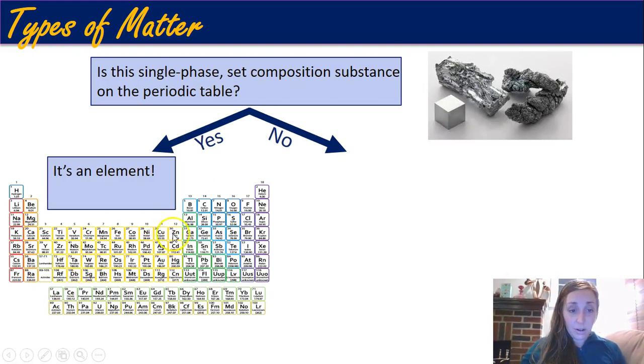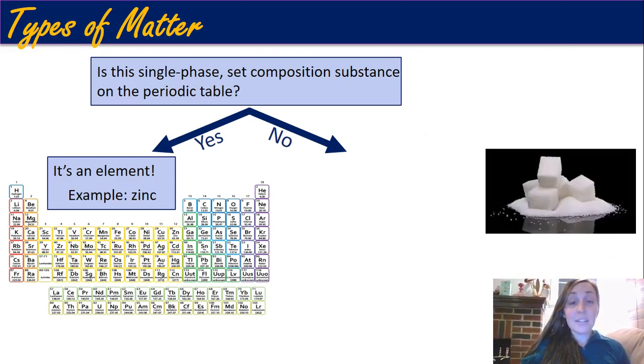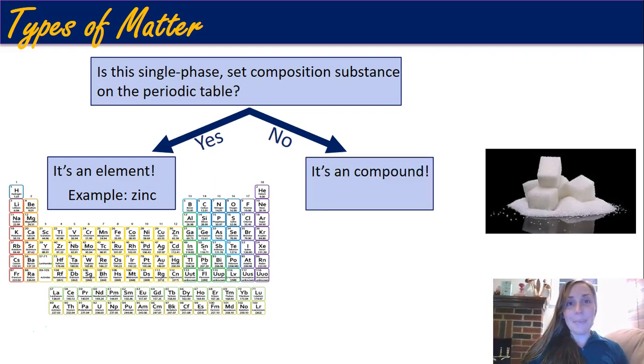For example, this is zinc. Zinc is right here, atomic number 30, so I know that this zinc is an element. Versus this is sugar or sucrose. Sucrose is not on the periodic table, but no matter what, you have a sample of sucrose is always exactly the same. So since it's always the same chemical composition, it can't be a mixture. It's got to be a pure substance. If it's not on the periodic table, it has to be a compound. So sucrose or sugar is a compound.